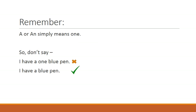A or AN simply means one — the number one. So you don't have to say 'I have a one blue pen' because A or AN already means one. Instead of 'I have a one blue pen,' you simply say 'I have a blue pen.' Similarly, instead of 'I have a one egg,' you say 'I have an egg.' Or instead of 'I saw one elephant,' you say 'I saw an elephant.' Both mean the same thing.